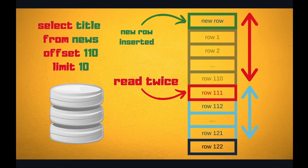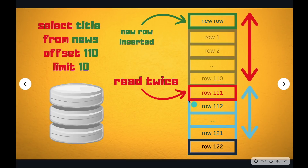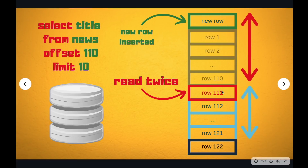Another problem with OFFSET is you might accidentally read duplicate records. Consider this: the user has requested page 11, which is OFFSET 110, and meanwhile someone inserted a new record. Now offsetting 110 rows will accidentally push a row you already read into your result set. All of a sudden you've read row 11 again — a duplicate.